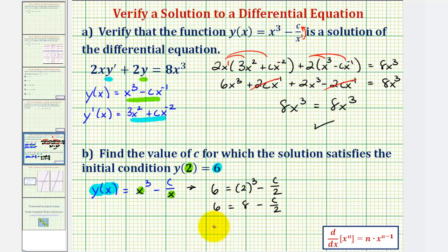If we subtract eight on both sides, that would give us negative two equals negative c divided by two. So if negative c divided by two equals negative two, we can solve for c by multiplying both sides by negative two. Multiply on this side, negative two over one.